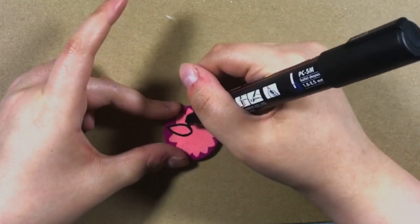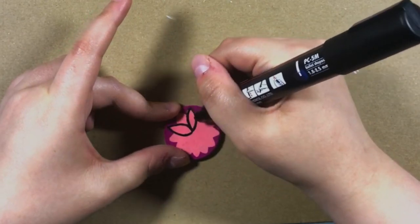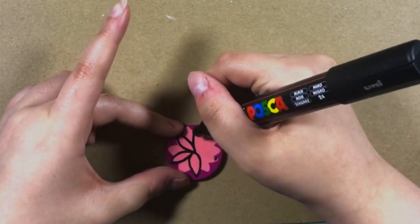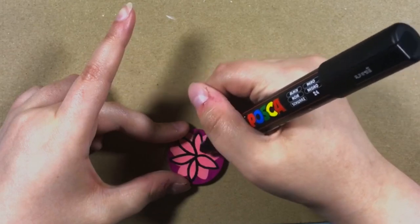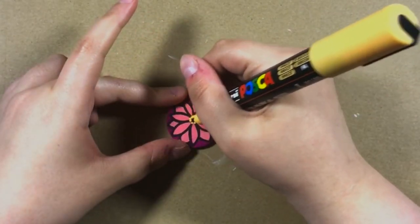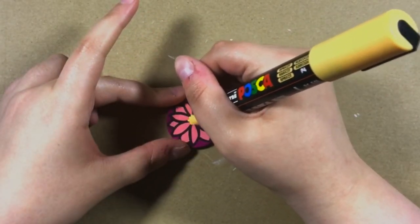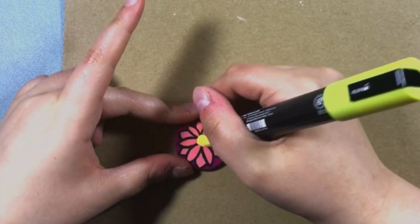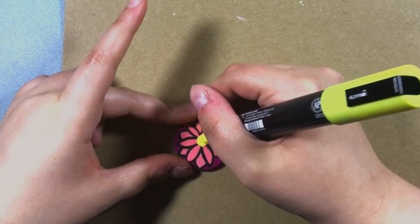As I only have one size for the black Posca, the line came out chunkier than I had originally wanted. Finally, it was time to do the center. I chose to use two different shades of yellow and just placed a bunch of little dots until they started to sort of blend together.